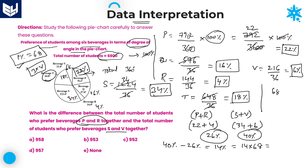Calculate 68 into 14: 68 × 4 = 272, carry 0; 68 × 10 = 680; total is 952. So 952 is the exact difference between the total number of students from P and R together, and total number of students from S and V together. Option C is the right answer for this question.